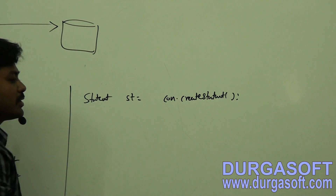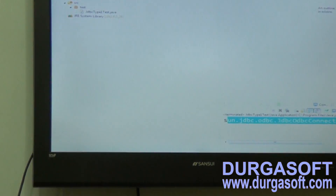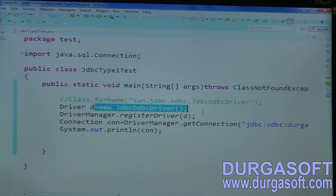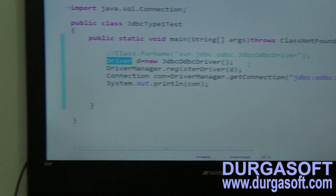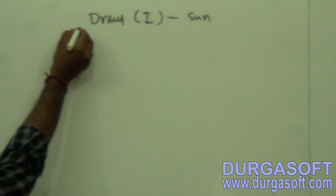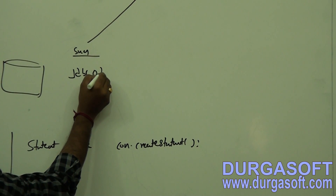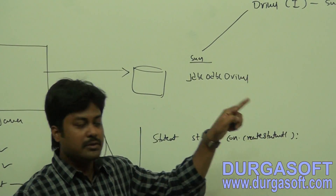Once after getting the connection, use connection.createStatement() to create a Statement object. Driver is the parent interface for JdbcOdbcDriver, so in Java we can do parent reference = child object. All driver implementations come from the Driver interface provided by Sun, and JdbcOdbcDriver is Sun's implementation of that interface.